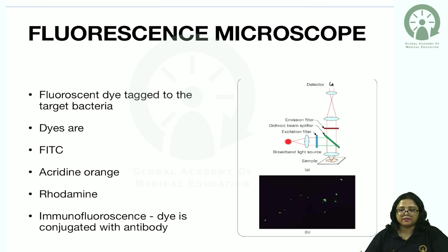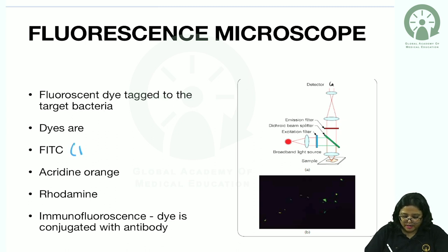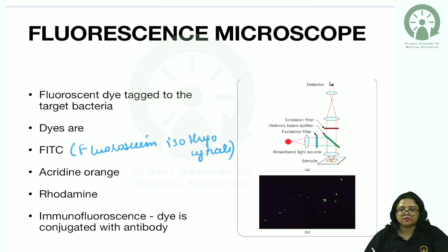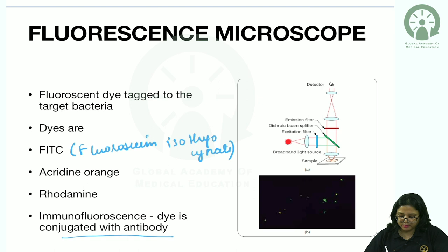In fluorescence microscopy, a fluorescent dye is tagged to the target bacteria. Common dyes are fluorescein isothiocyanate, acridine orange, and rhodamine. In immunofluorescence, the dye is conjugated with an antibody.